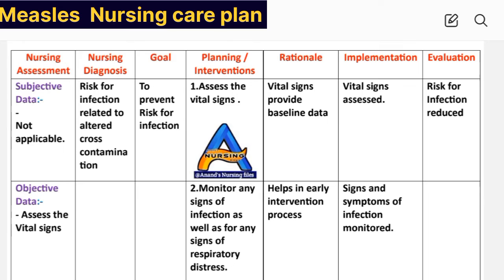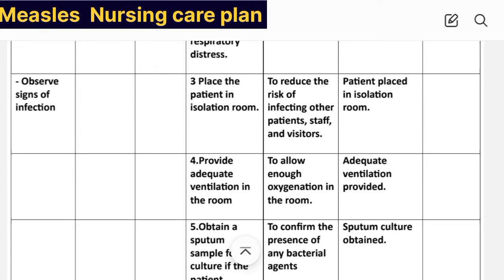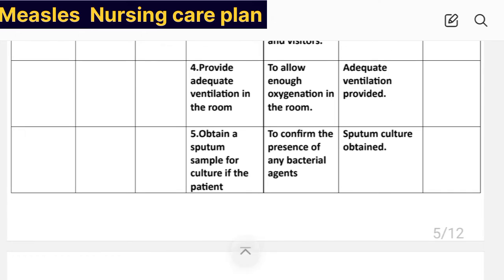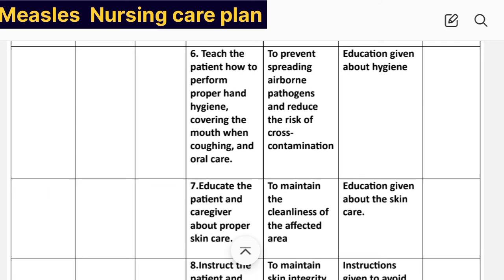Goal: to prevent risk for infection. Intervention number one: assess the vital signs. Rationale: vital signs provide baseline data. Implementation: vital signs assessed. Intervention number two: monitor any signs of infection as well as any signs of respiratory distress. Rationale: helps in early intervention process. Implementation: signs and symptoms of infection monitored. Intervention number three: place the patient in an isolation room. Rationale: to reduce the risk of infecting other patients, staff, and visitors. Implementation: patient placed in isolation room.